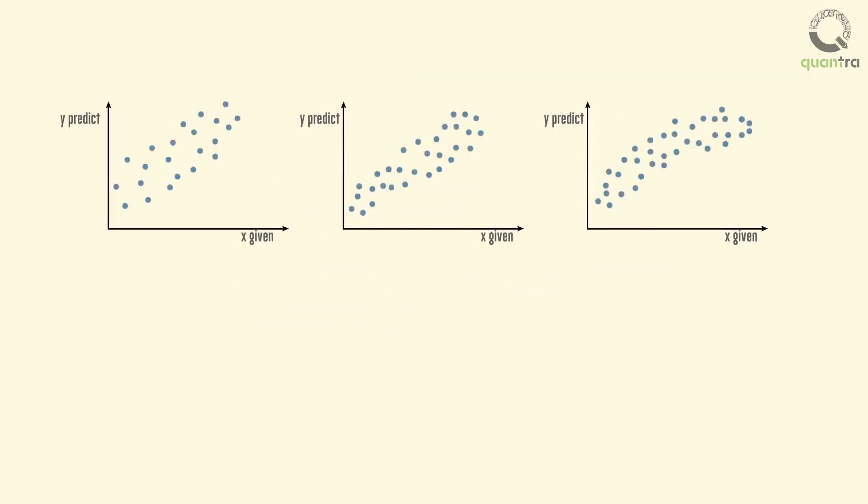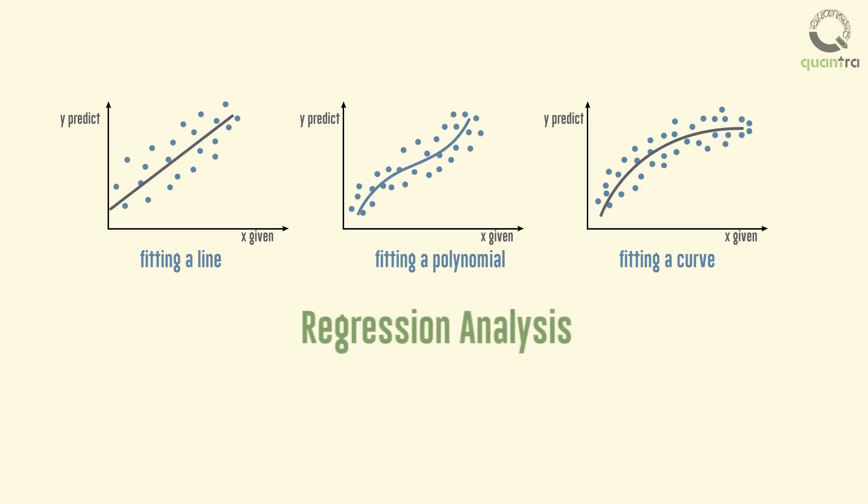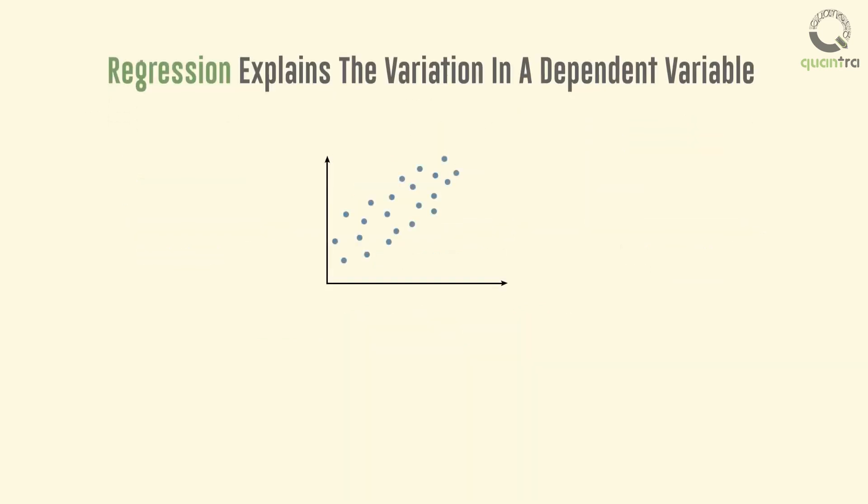When one tries to capture a mathematical relationship between x and y variables by fitting a line, polynomial, or a curve through these scatter plots, such that one should be able to make a reasonably good prediction of y given x, then the mathematical process of deriving such an equation between x and y is called regression analysis. To break it down further, regression explains the variation in a dependent variable in terms of an independent variable.